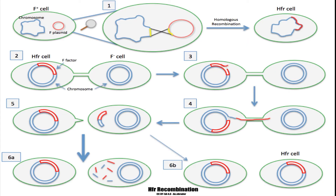In recombination, the F-factor inserts into the genome of the cell and creates a high frequency of recombination cell, abbreviated HFR cell. The HFR cell forms a pilus and attaches to a recipient cell. The DNA is transferred from the HFR cell to the recipient cell. Then the pilus detaches from the recipient cell. When the F-factor is completely transferred, the recipient cell becomes an HFR cell.